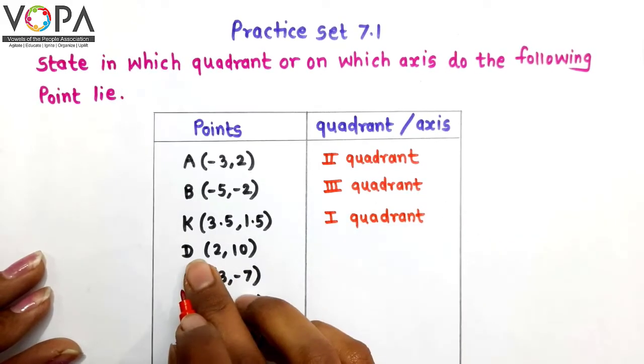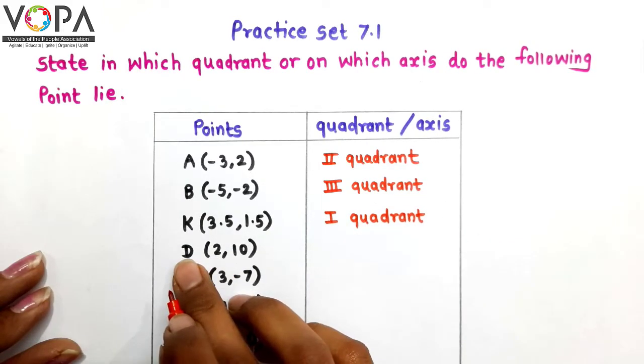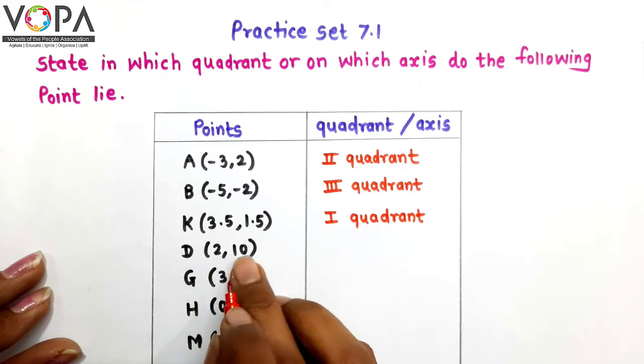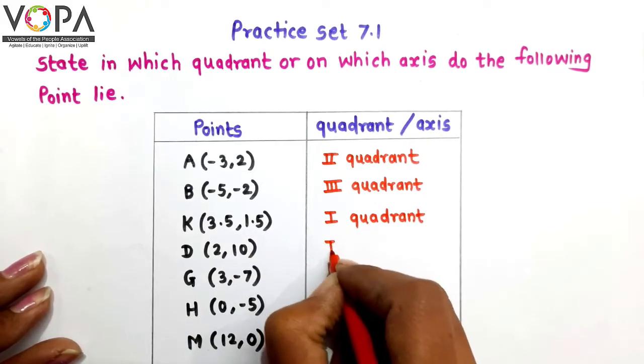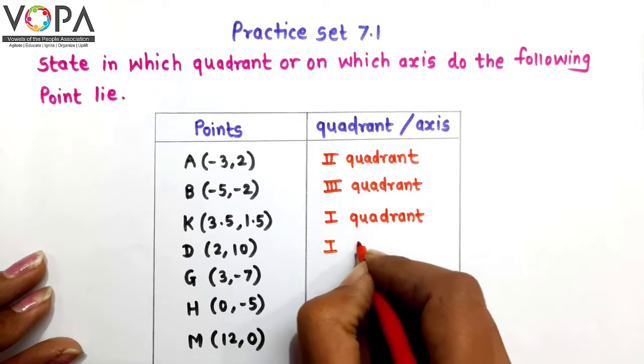Also the coordinates of point D are positive. Therefore D lies in the first quadrant.